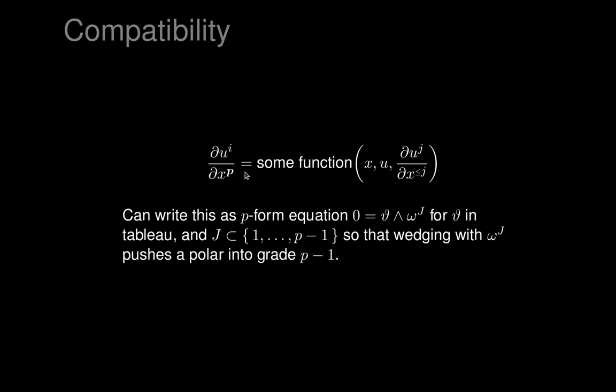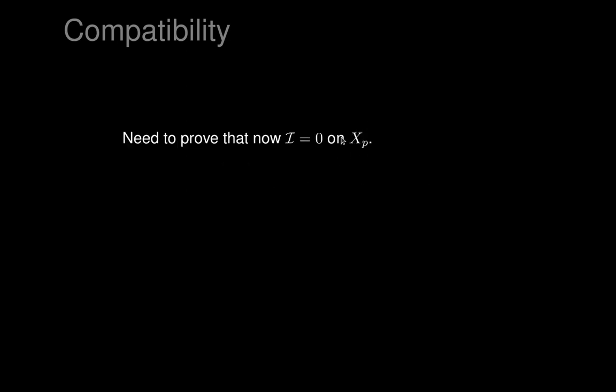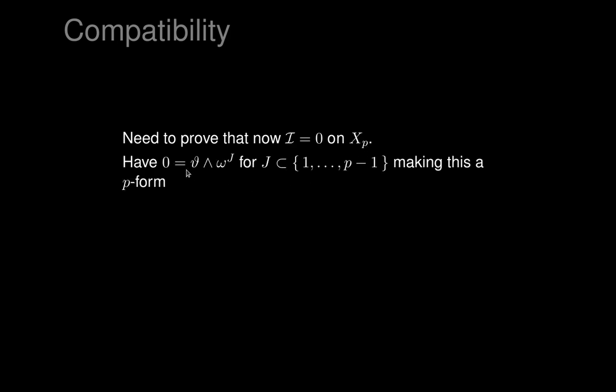Now we need to show that the entire exterior differential system vanishes on this graph X_p. Capital X_p is the graph of the solution of those equations — when we solve all the equations in the variable x_p, we get an object capital X_p — and that's supposed to be an integral manifold. We want to prove that happens, so we have to prove the exterior differential system is zero on X_p. We have the vanishing of certain forms from the exterior differential system: everything of some grade up to p-minus-1, wedged up as needed with omegas to force it into grade p-minus-1, and those expressions are the ones that now vanish on X_p.